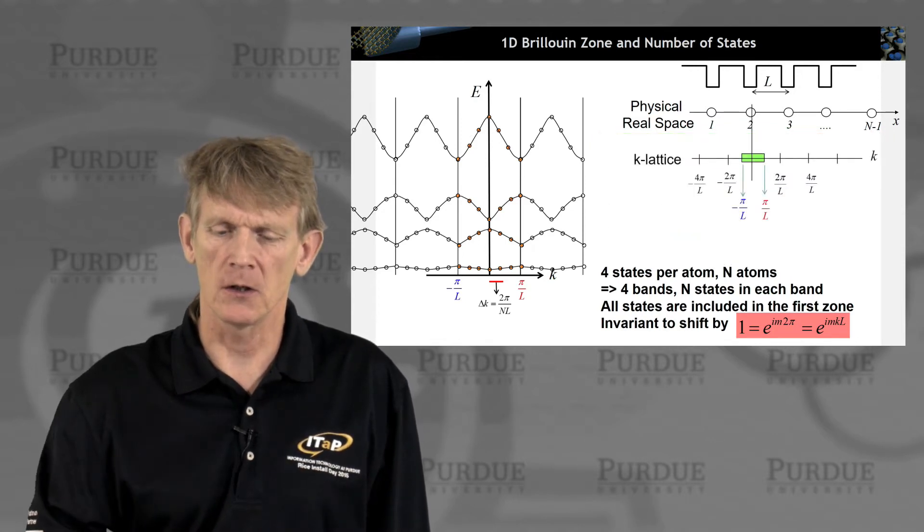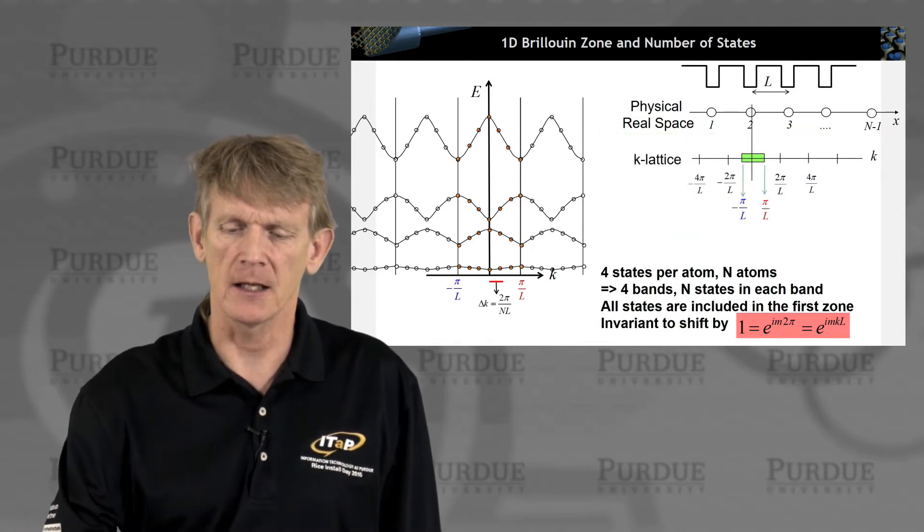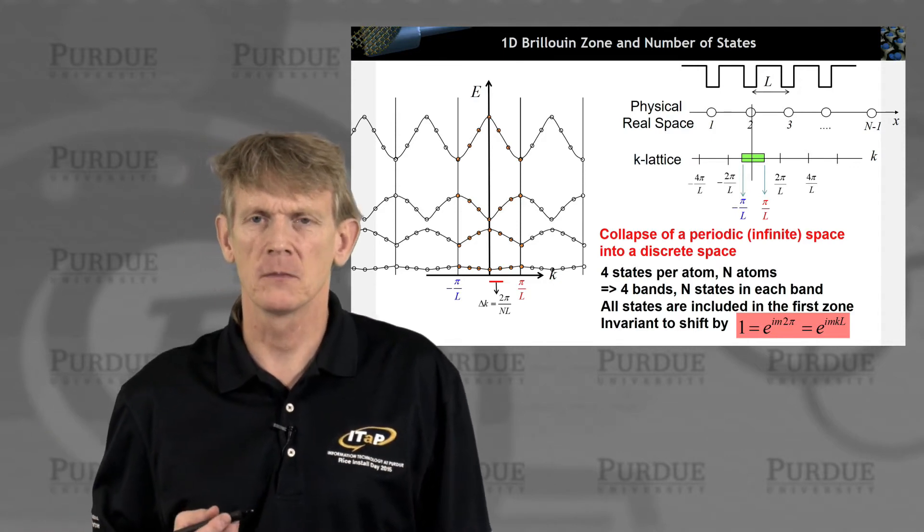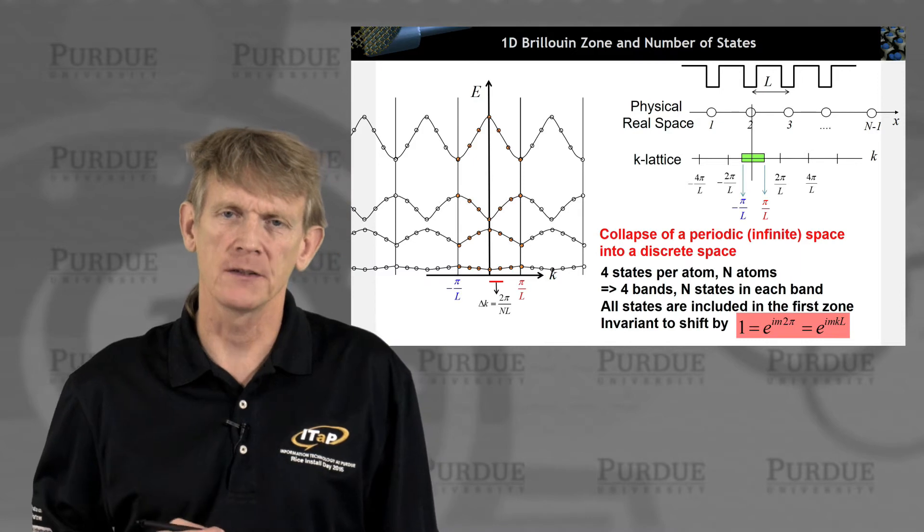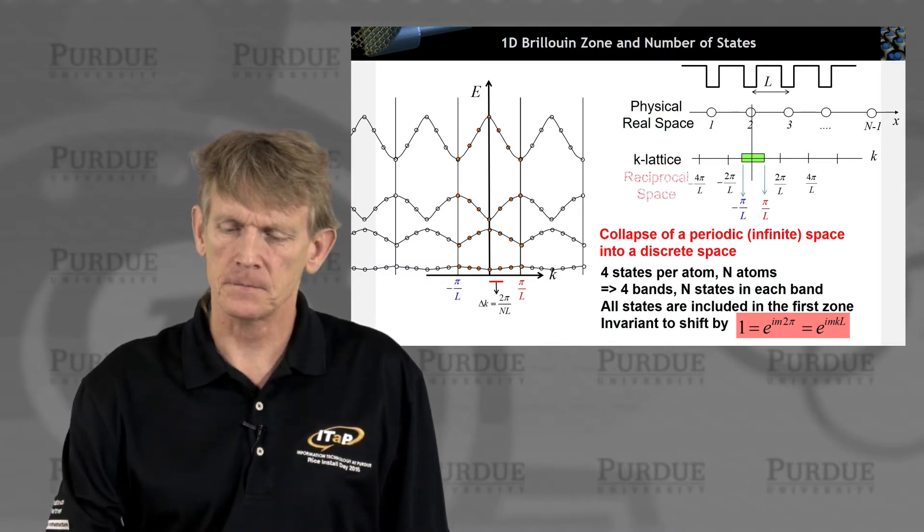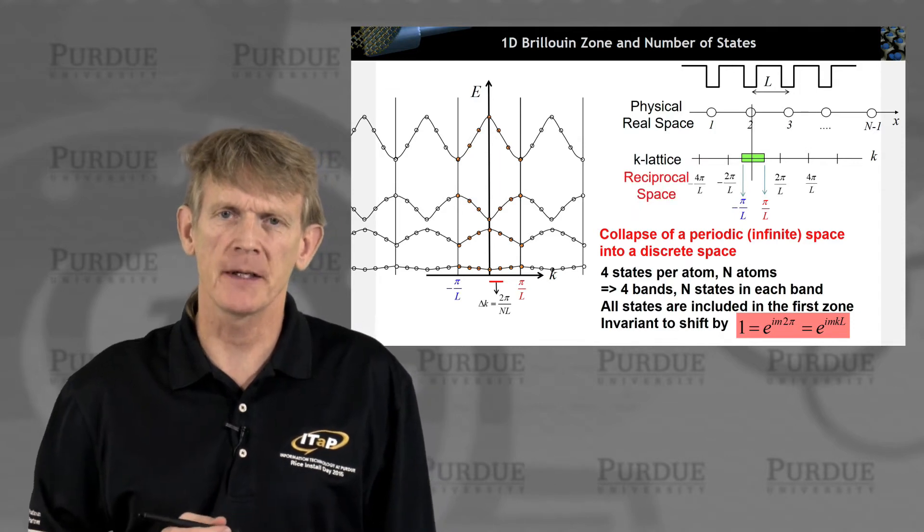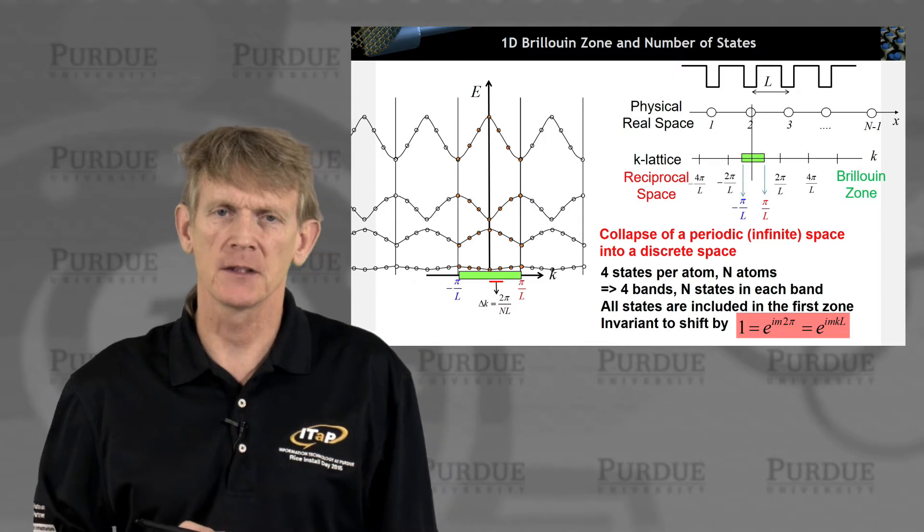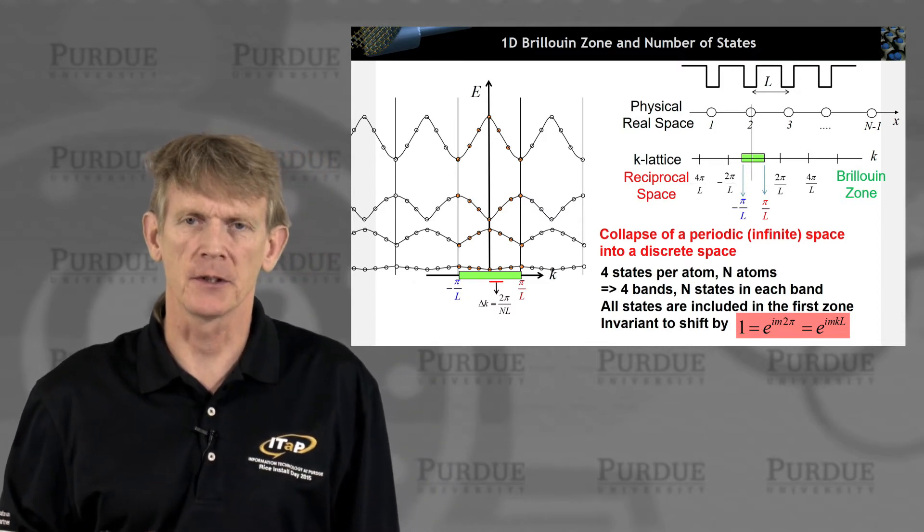So that is what we call a Brillouin zone. We have a k-lattice space, where we collapse an infinite or quasi-infinite periodic space into a discrete space. And we call that a reciprocal space. And the inner zone that represents all the information is the so-called Brillouin zone.